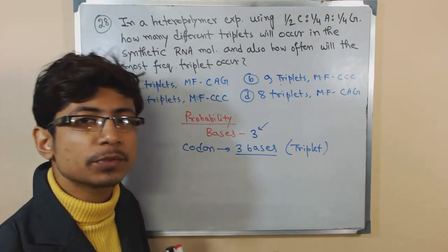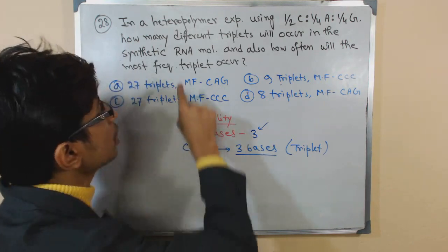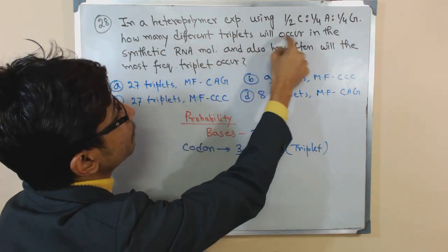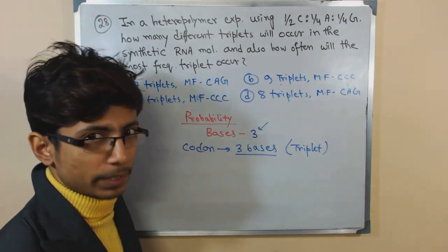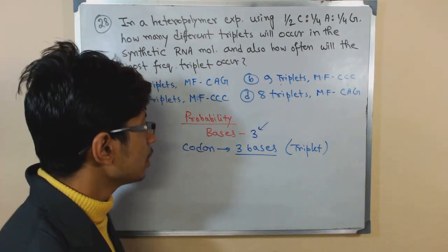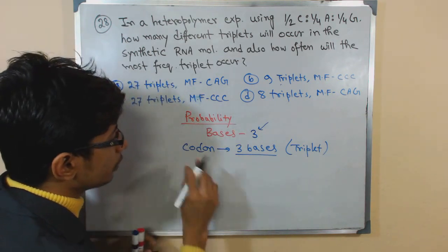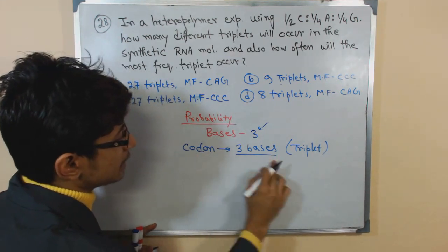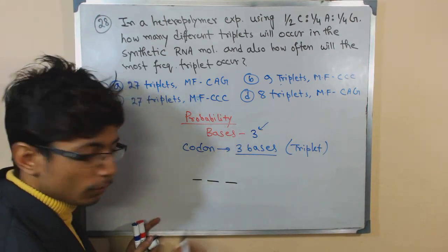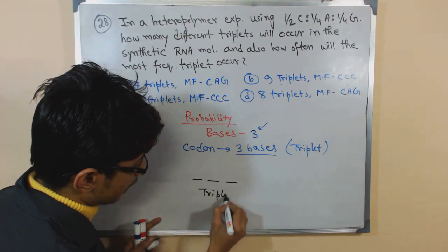The first question is: how many different versions of the sequence can we have? How many different triplets will occur? The total number of triplets - what is that number? It is very easy to calculate.